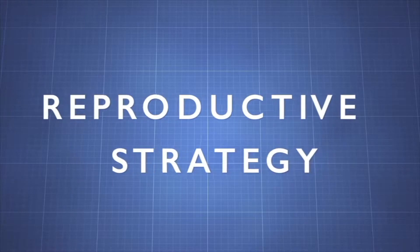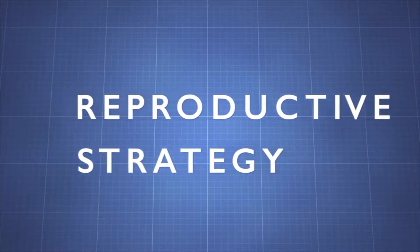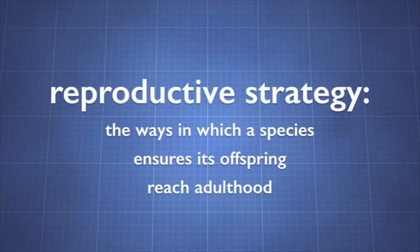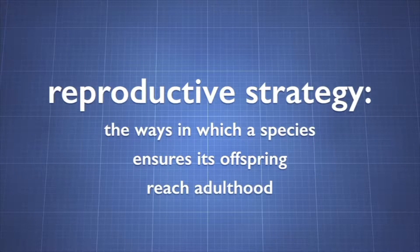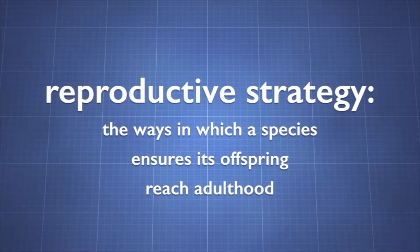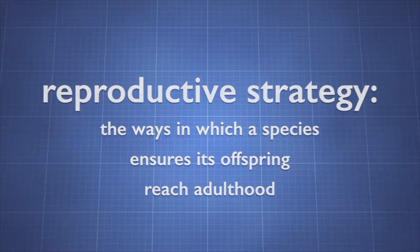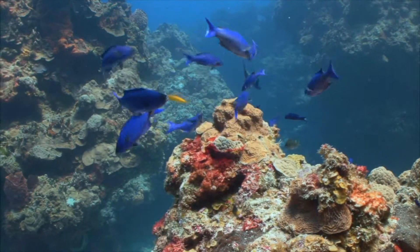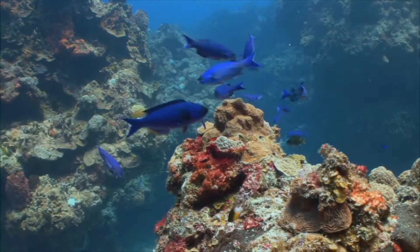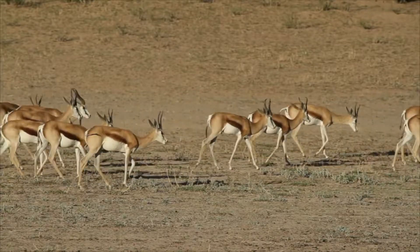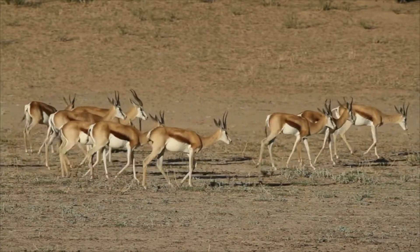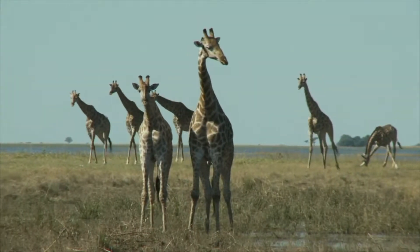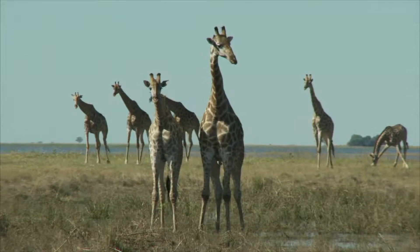Let's learn more about reproductive strategy. Reproductive strategy refers to the ways in which a species ensures its offspring reach adulthood. The reproductive strategy evolves to maximize the number of offspring that reach maturity and reproduce. The animal world engages in various reproductive strategies.